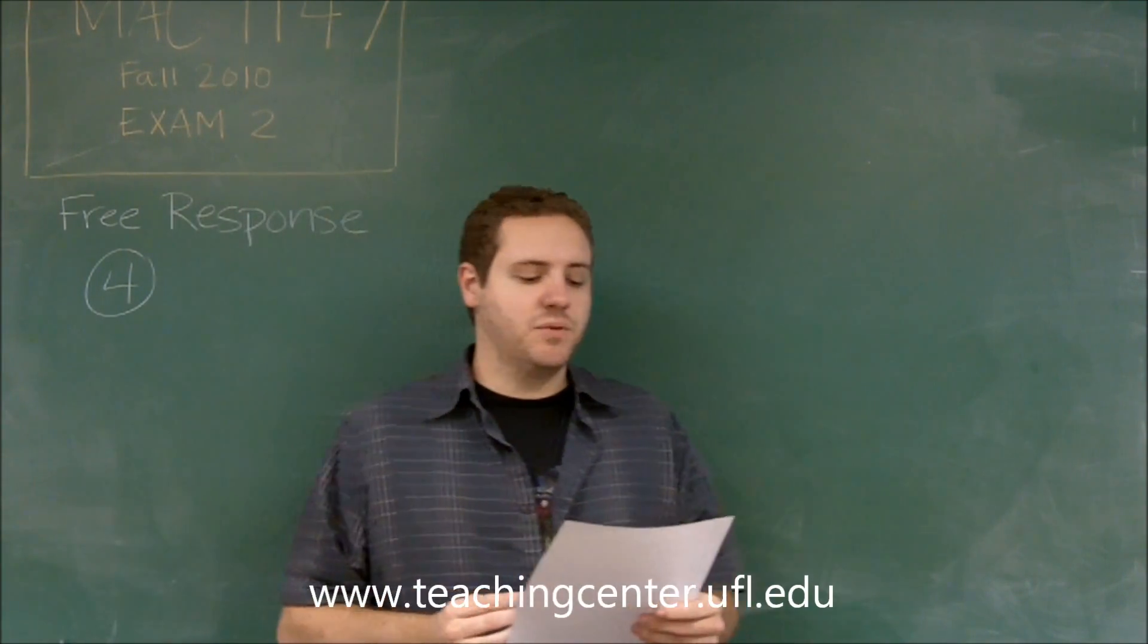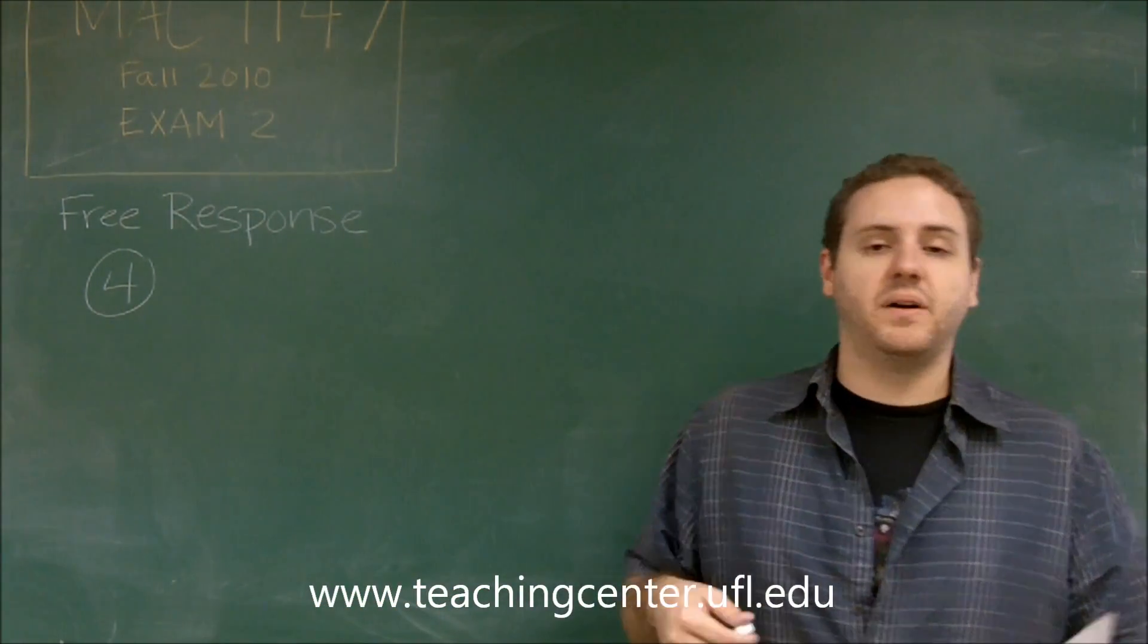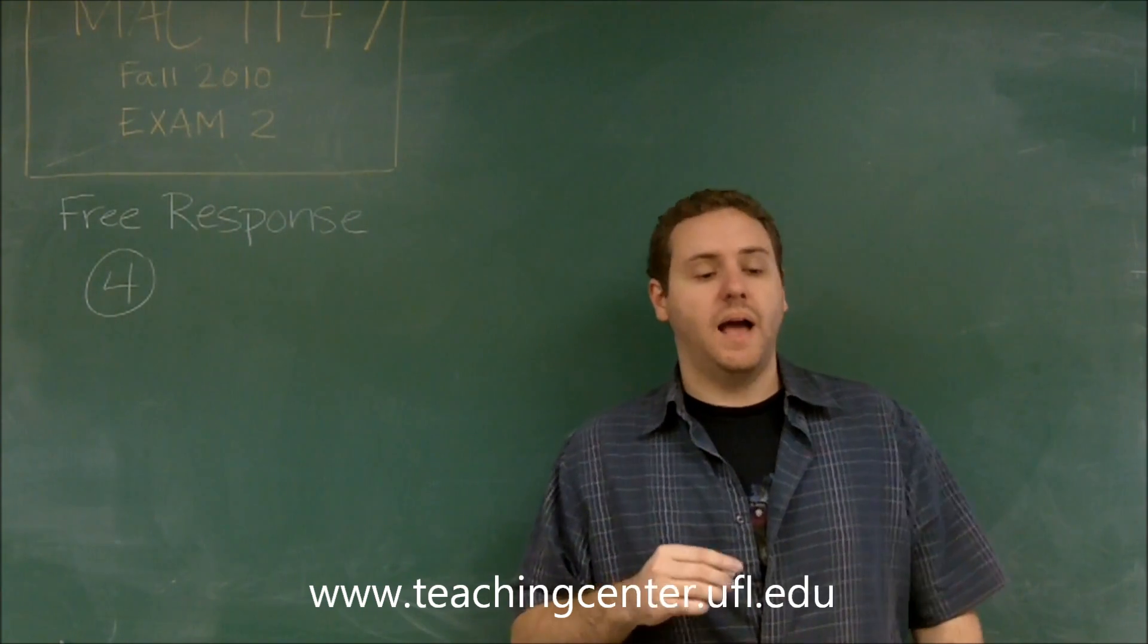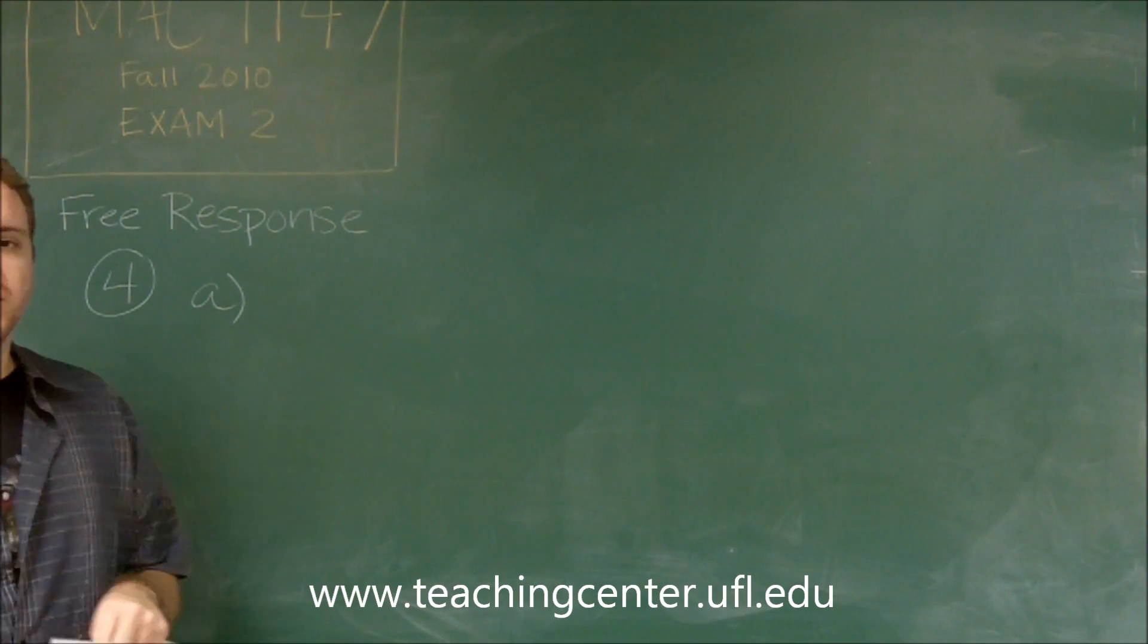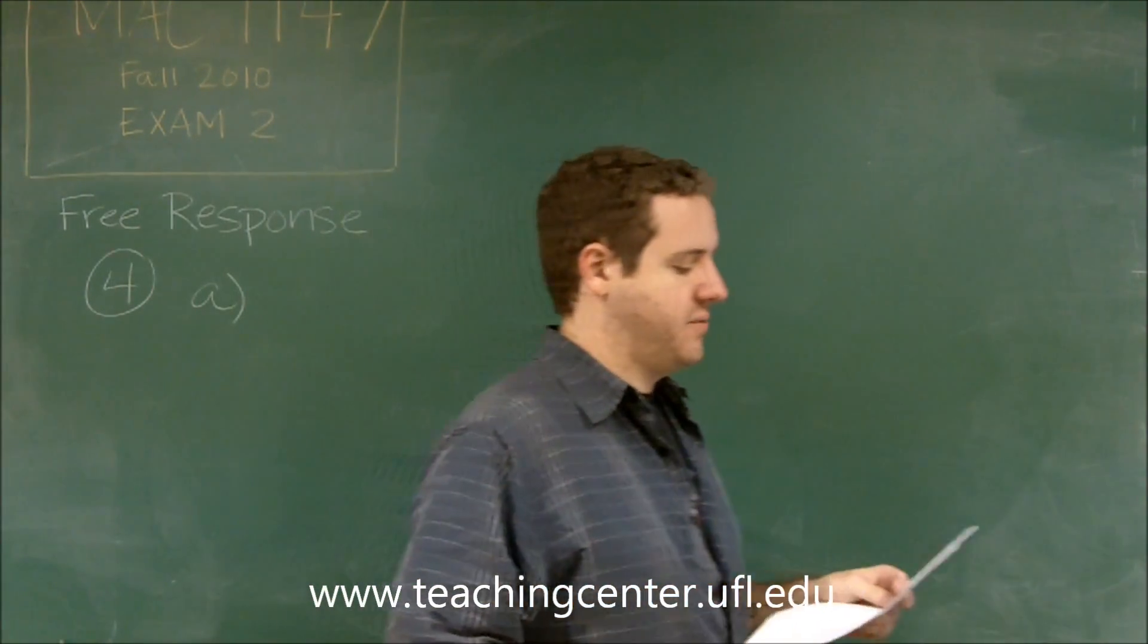On free response number four, we have a rational function where we need to find out a lot of things about it and finally graph it. So let's start out with the basic information, the stuff you would need to graph it in the first place.